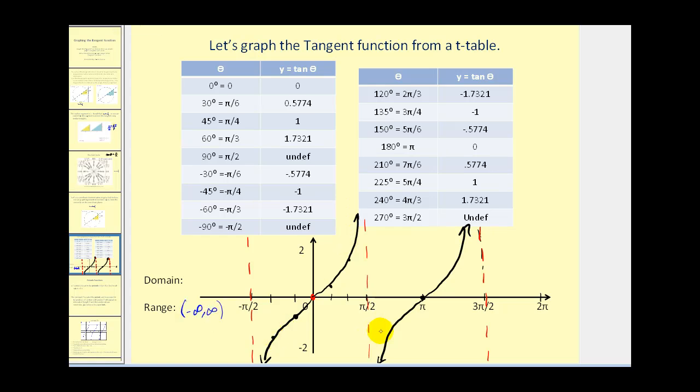The domain will be all x's such that x does not equal some odd multiple of pi over two. Notice we have one pi over two, three pi over two, and x would be five pi over two. We can state that by saying two n plus one times pi over two. So as long as x doesn't equal an odd multiple of pi over two, it's in the domain.